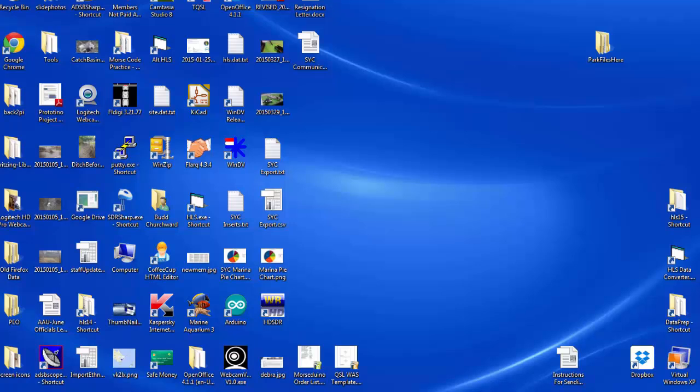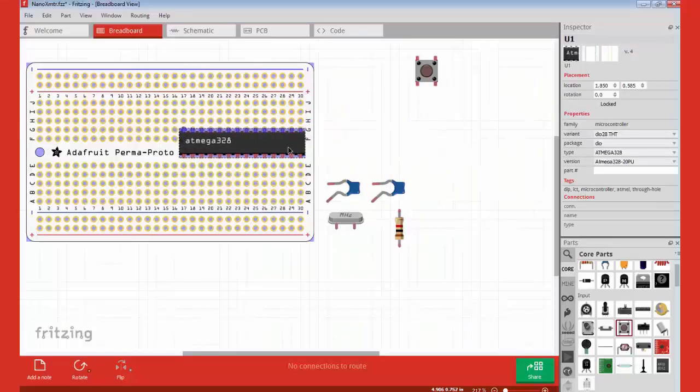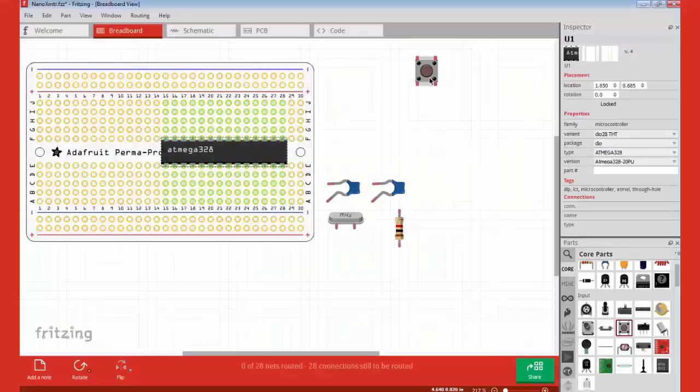While we're waiting for that to cure, I'm going to load up Fritzing and lay out a circuit that I'm going to use to drive that LED. My plan is to write a sketch using the Arduino IDE and then put that into a chip which will be on my own board. So I'm going to create what might be considered my own Arduino clone.